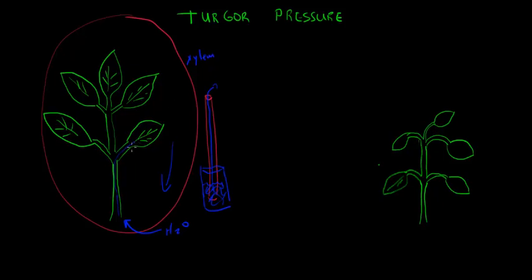Those straws go from the roots up through the stem, up through the leaves, and then into the leaves. At the bottom, the underside of the leaves of most plants is a little opening, just a little hole, called a stomata.